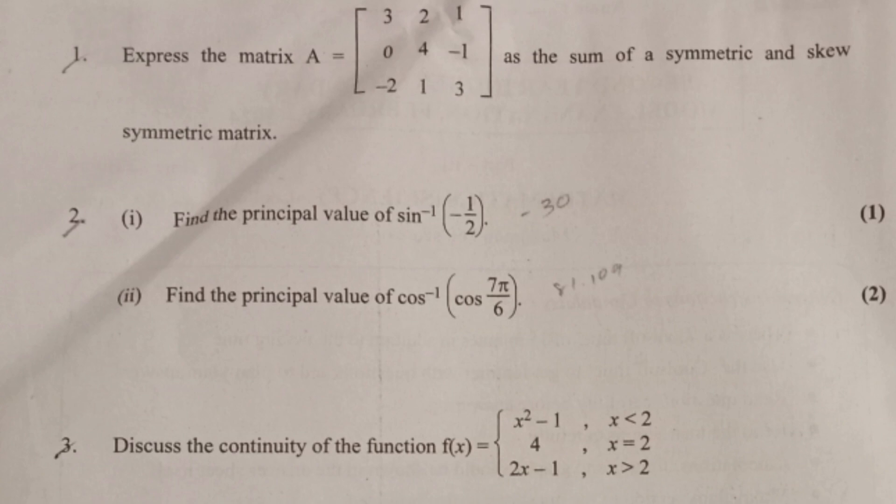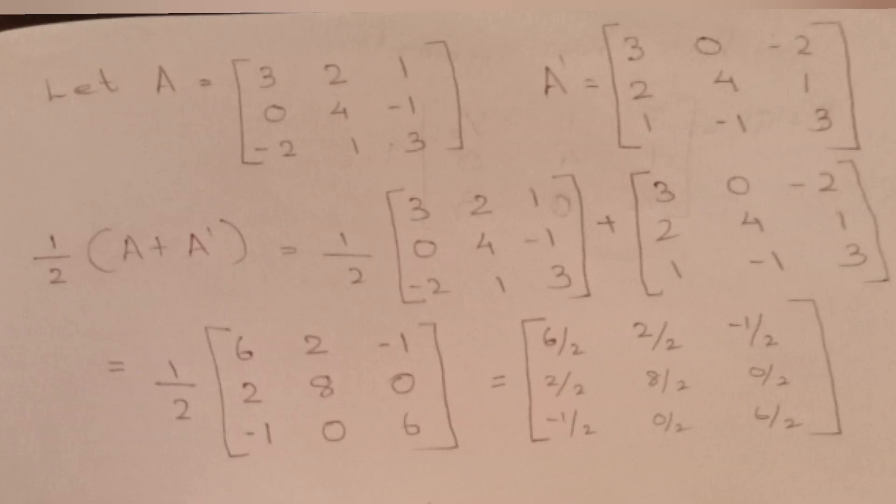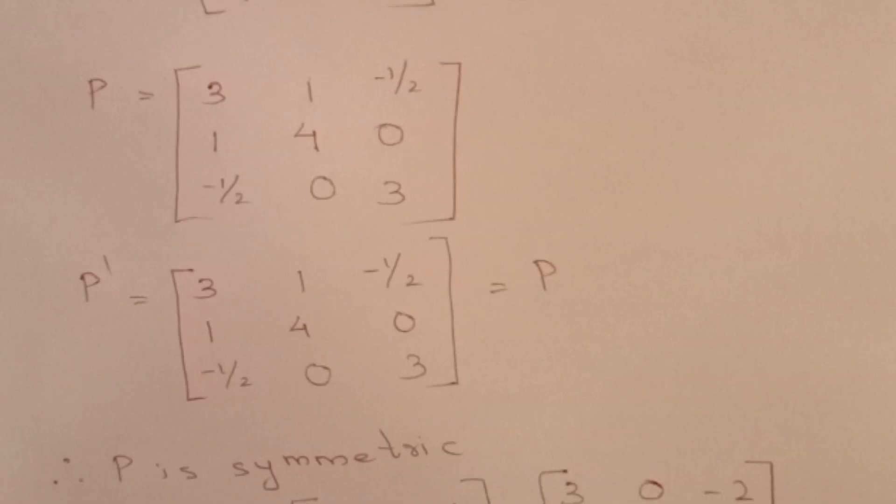Express the matrix A equal to [3 2 1 / 0 4 -1 / -2 1 3] as the sum of a symmetric and skew-symmetric matrix. Answer: Let A equal that matrix. A transpose equals [3 0 -2 / 2 4 1 / 1 -1 3]. Half of (A plus A transpose) equals half of [6 2 -1 / 2 8 0 / -1 0 6], which gives P equal to [3 1 -1/2 / 1 4 0 / -1/2 0 3].